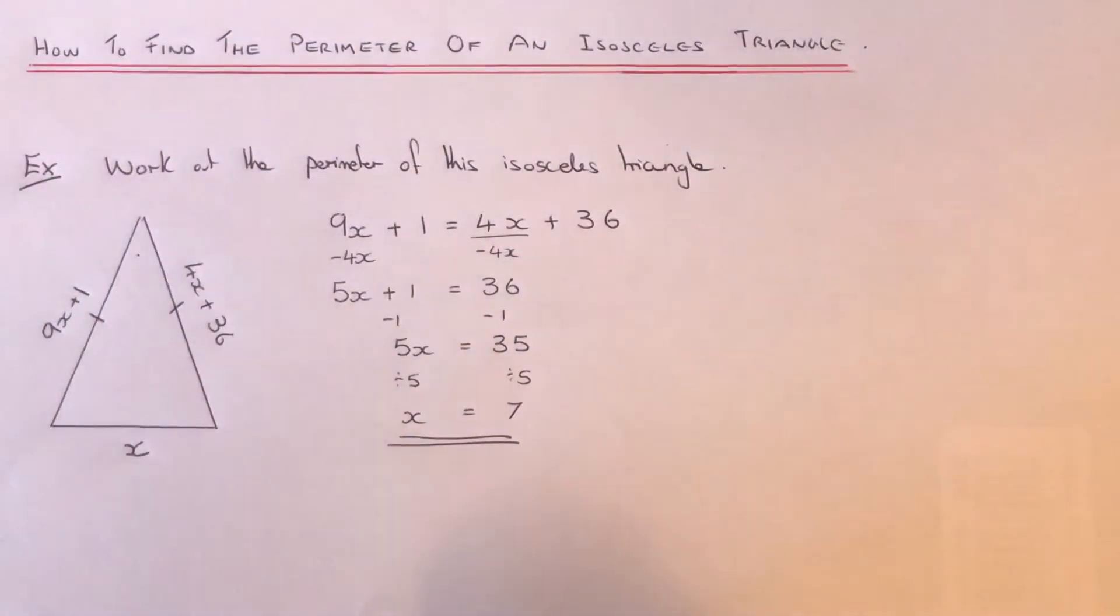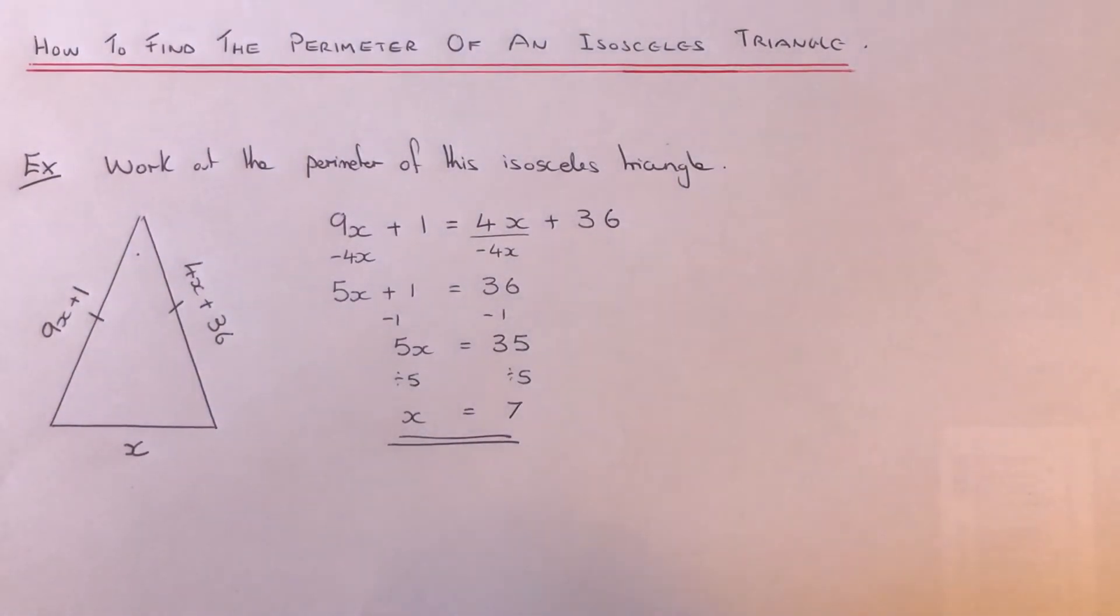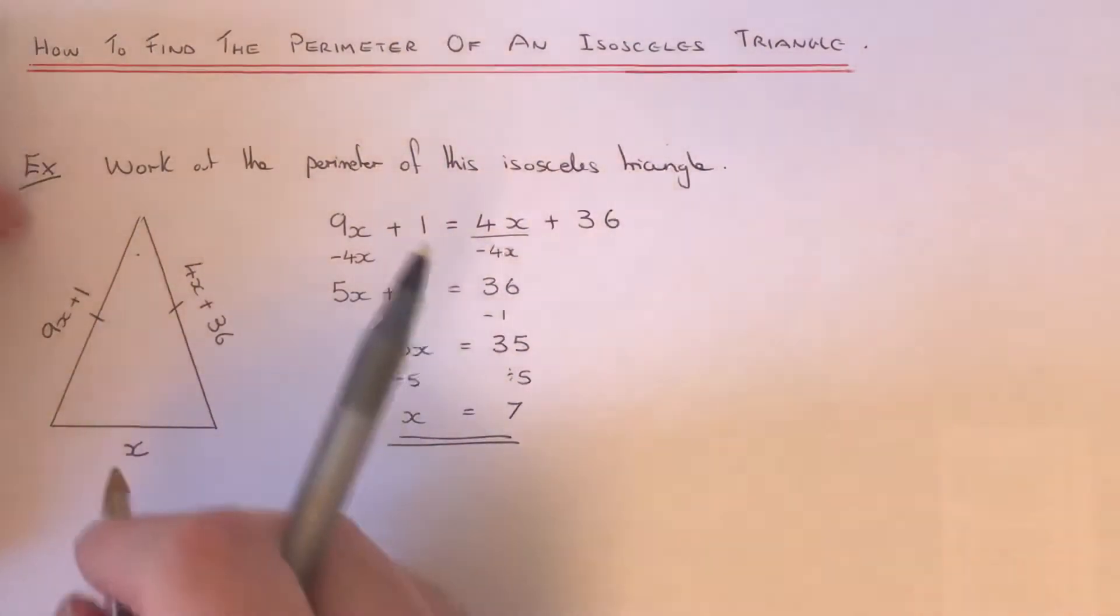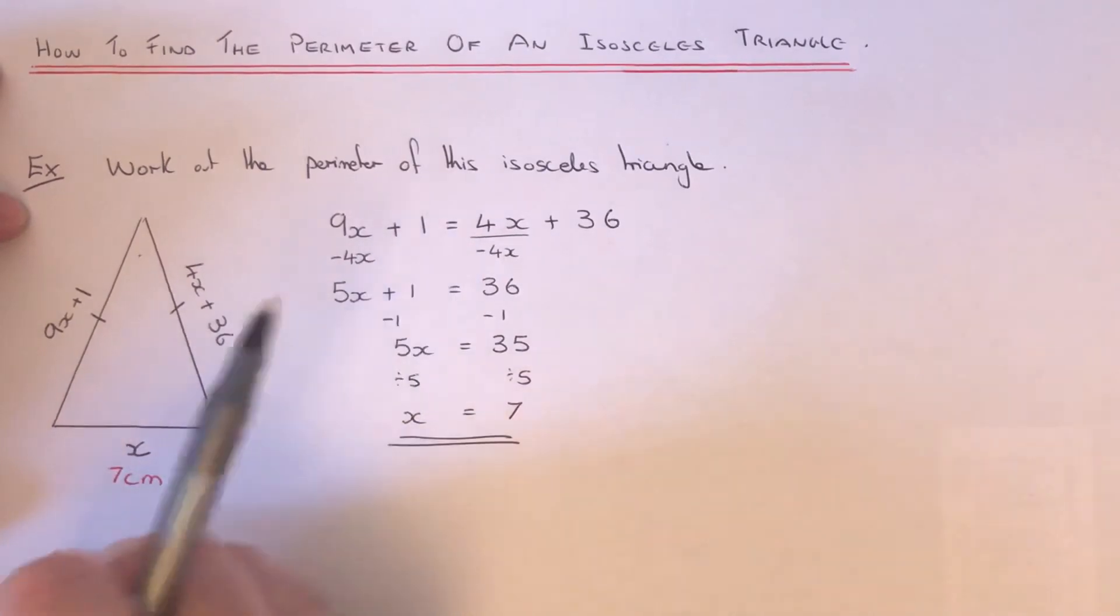Okay, so we know that x is 7 now. So what we can do next is work out the lengths around the triangle. Okay, so this bottom edge here is just x. That is 7 centimeters long.